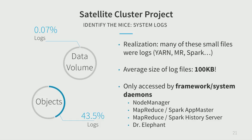We asked what to do about this. Introspection revealed that many small files were system logs created by system daemons — YARN logs, MapReduce, application master logs, etc. — with an average size of only about 100 kilobytes. The data volume stored from these logs was less than 0.1% of total cluster data, yet it was consuming almost 50% of the objects on the namenode. Given that the namenode is the primary scalability bottleneck for HDFS, this indicated big room for improvement.